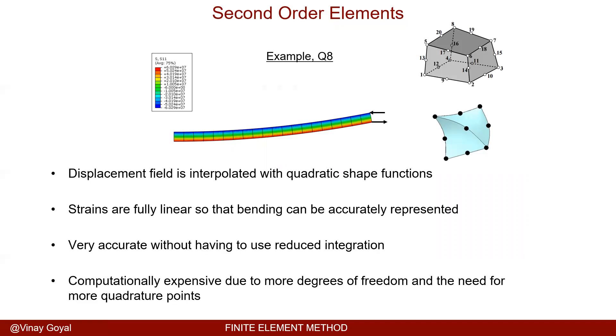The second-order element, the Q8 element, produces very good results. Displacement field is interpolated with quadratic shape functions. You're able to represent a linear strain gradient so that the bending can be accurately represented, very accurate.